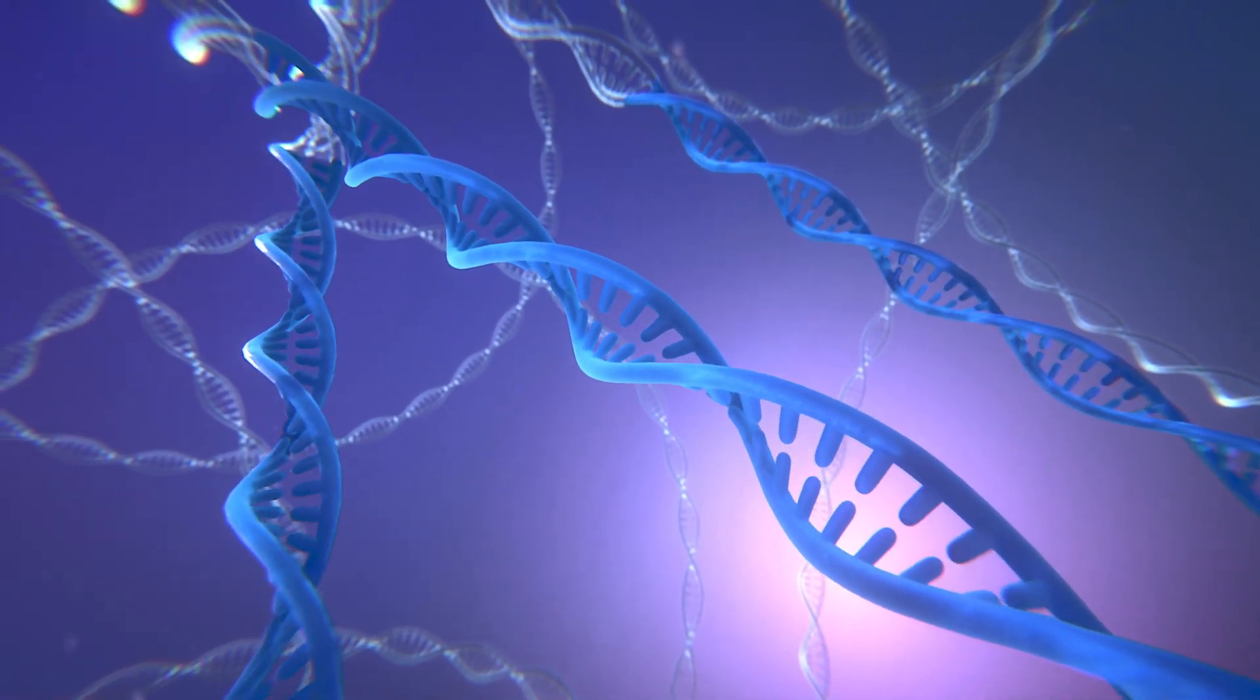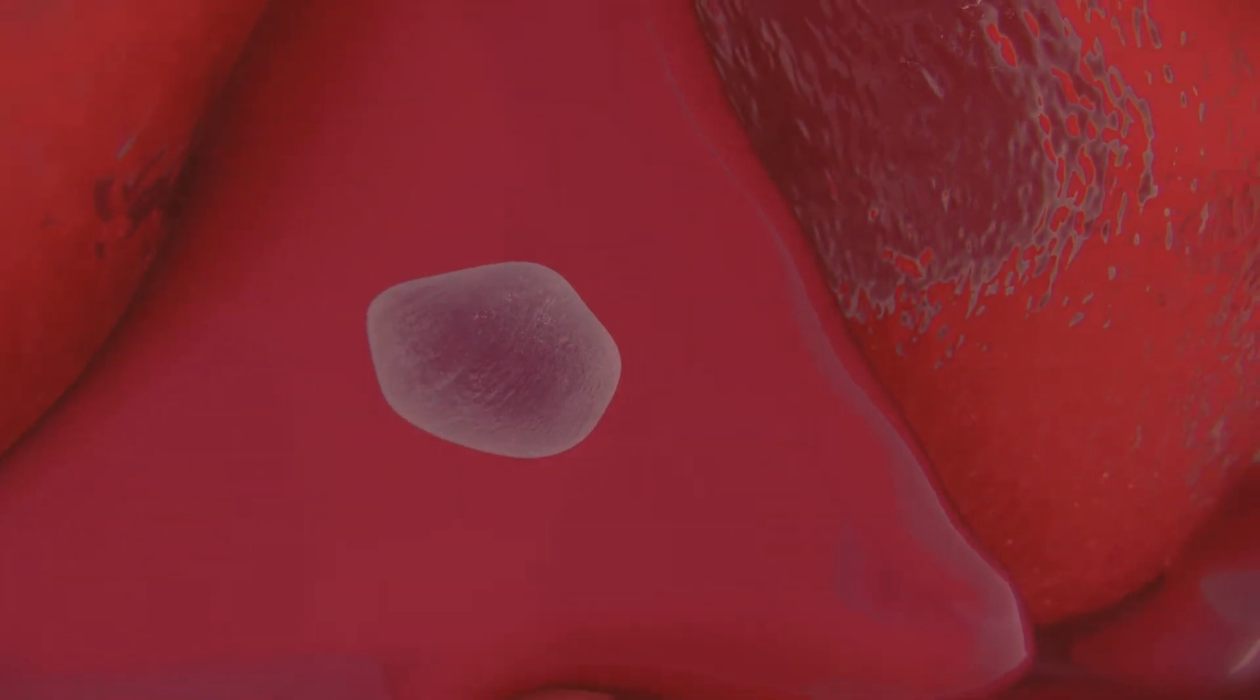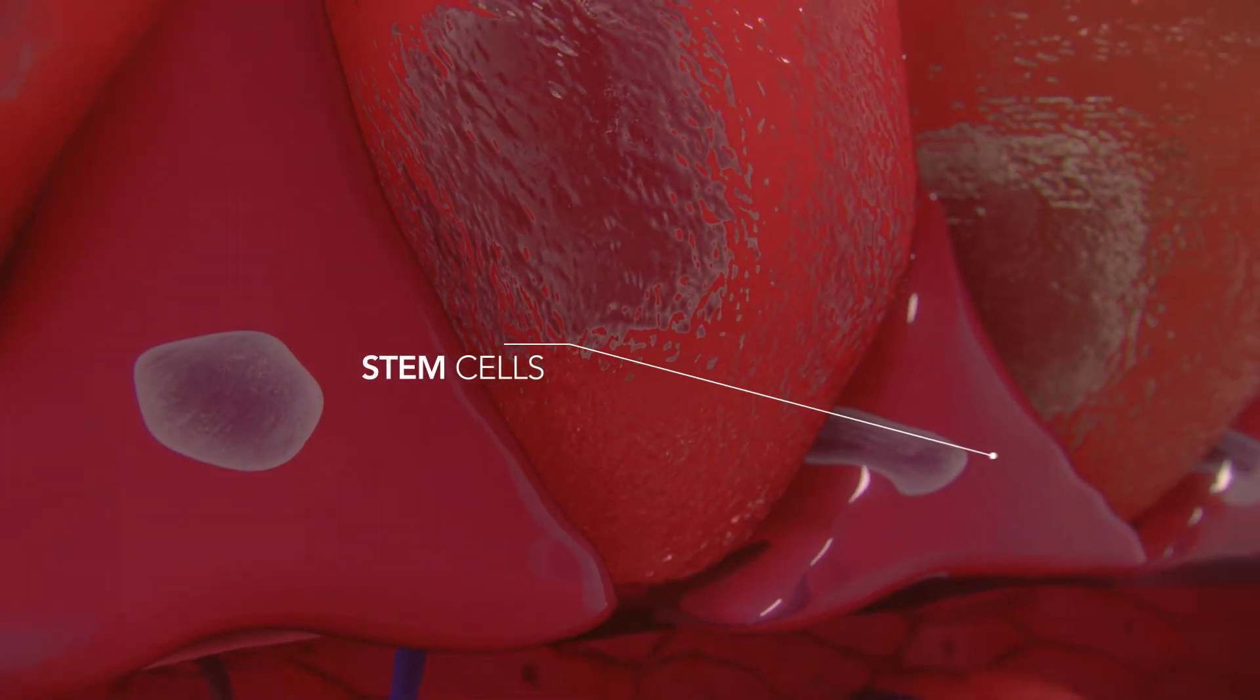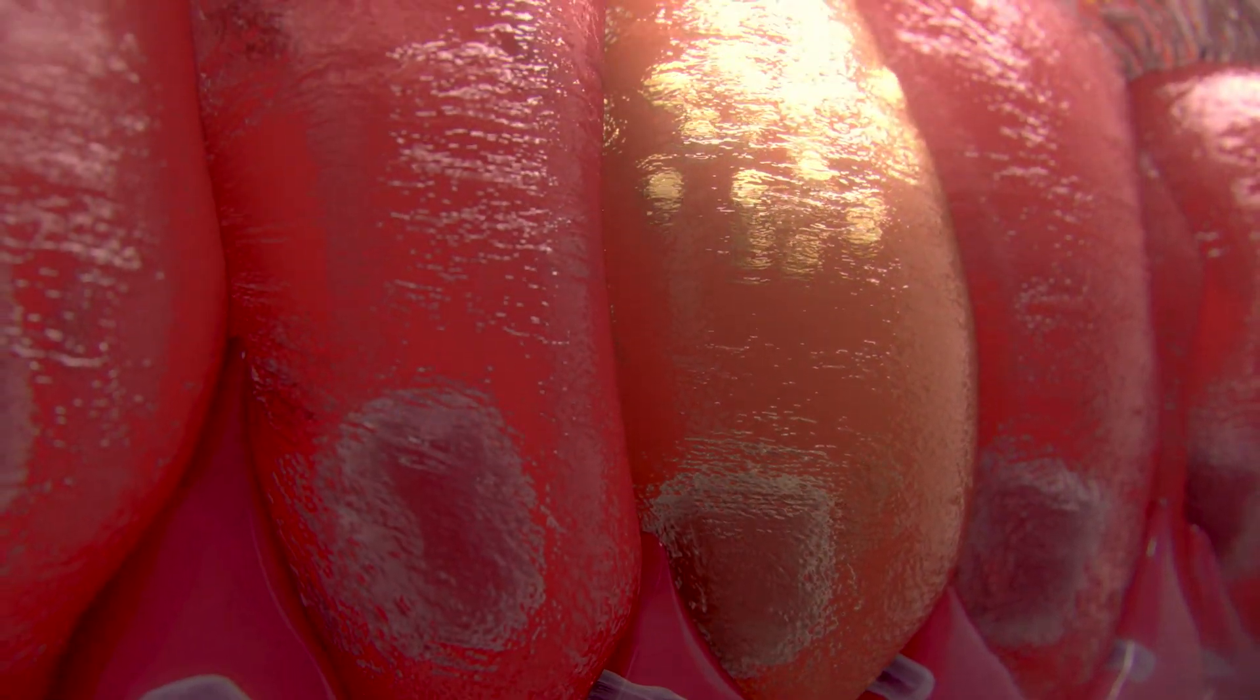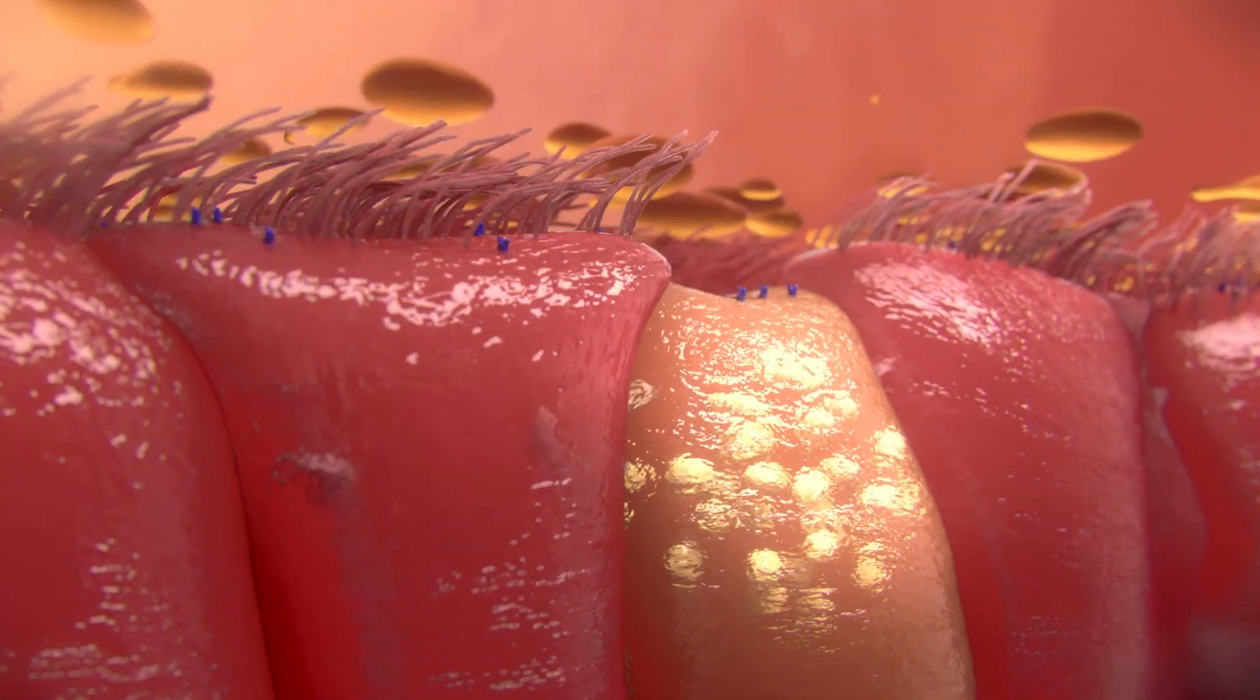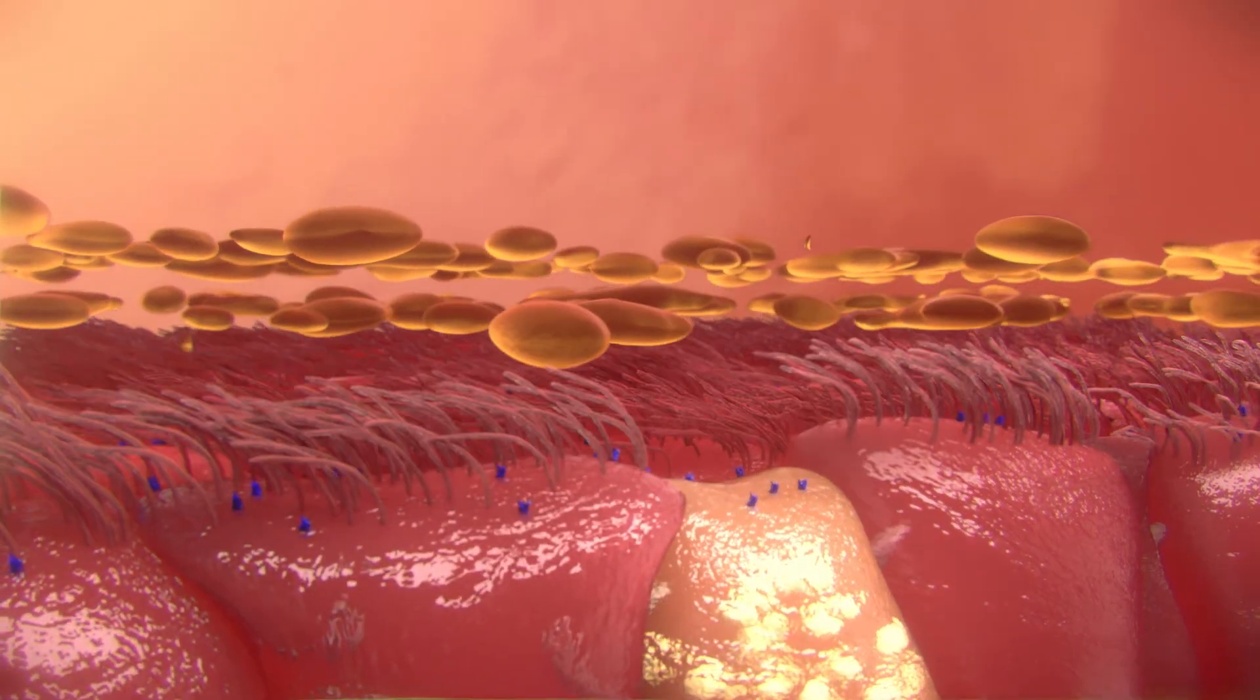Gene editing changes the DNA permanently. So if CFTR mutations in stem cells can be edited, all daughter cells derived from the edited stem cells will make correct CFTR protein, making repeated treatments unnecessary.